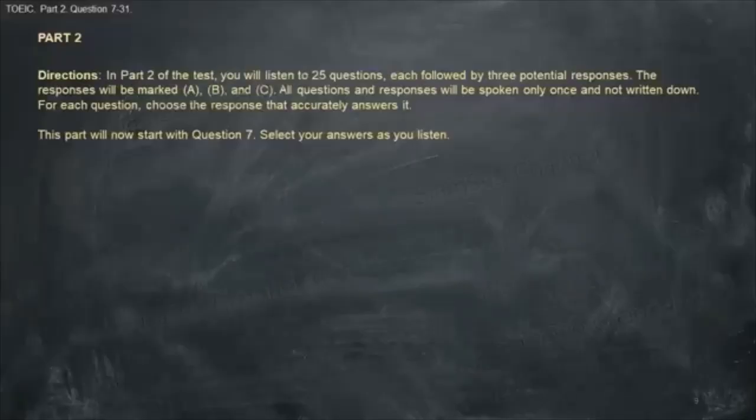Part 2 Directions. In part 2 of the test, you will listen to 25 questions, each followed by three potential responses. The responses will be marked A, B and C. All questions and responses will be spoken only once and not written down. For each question, choose the response that accurately answers it.